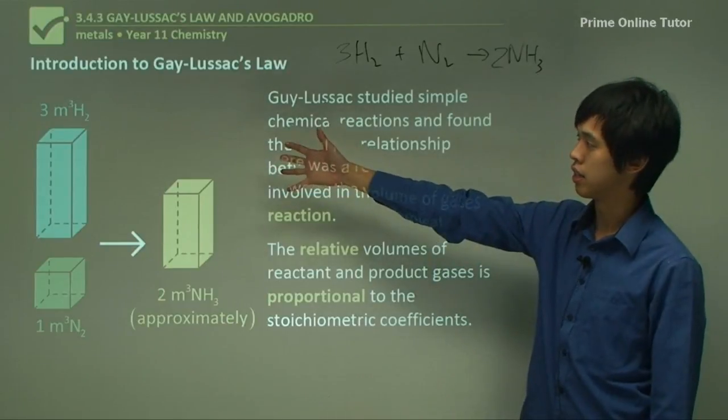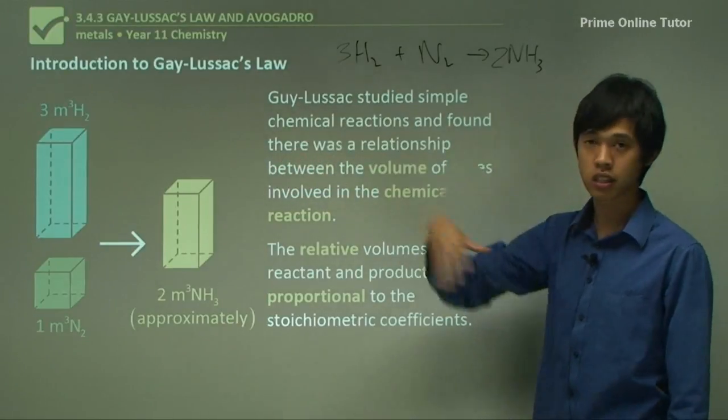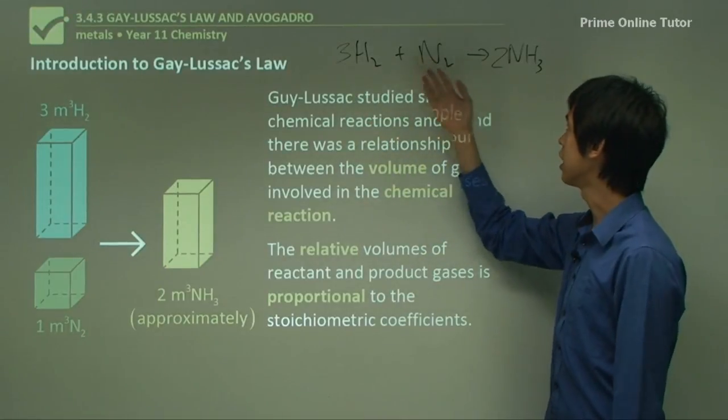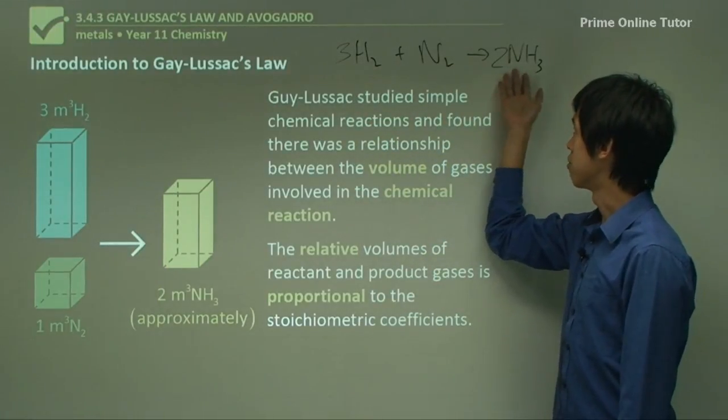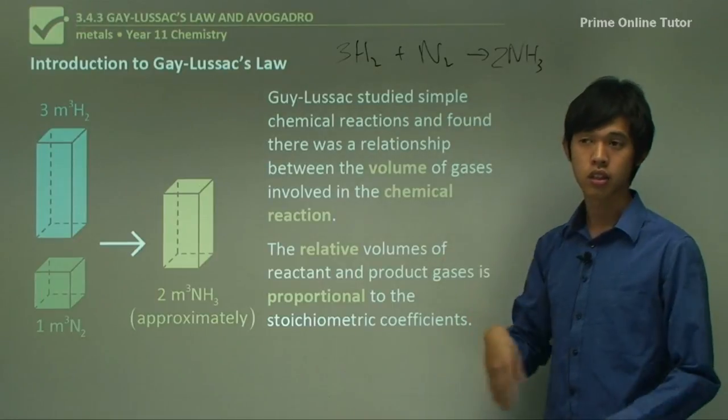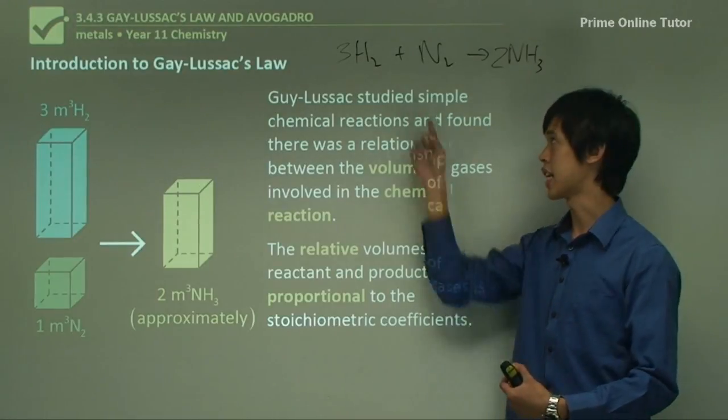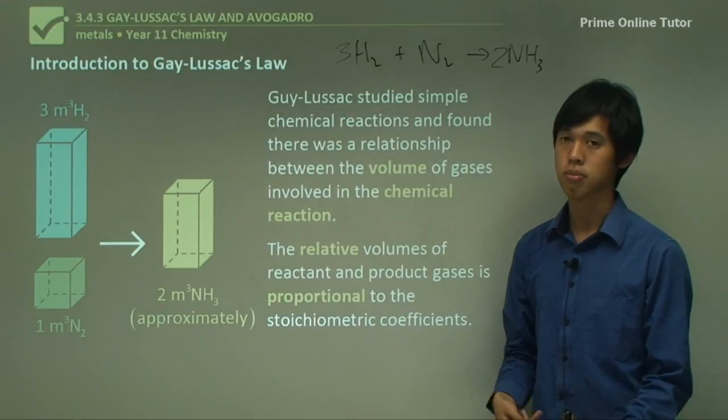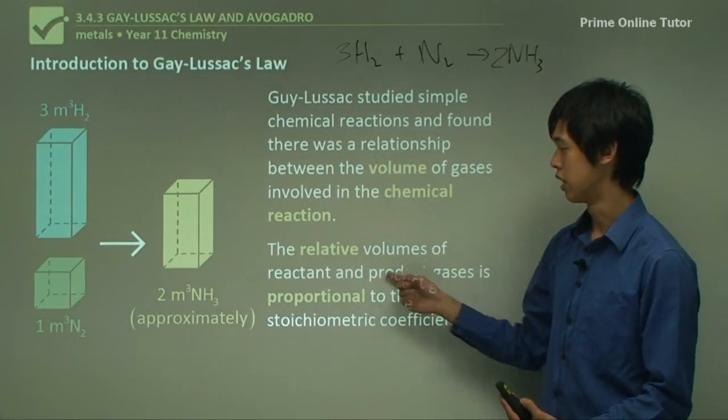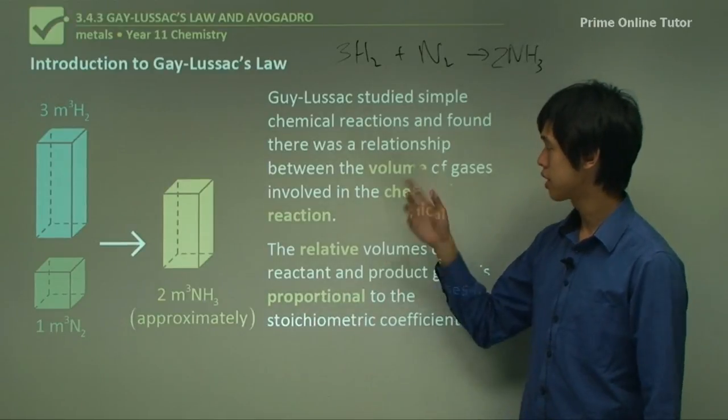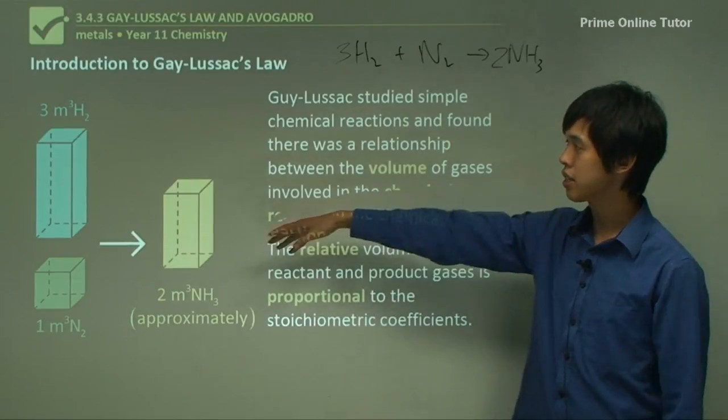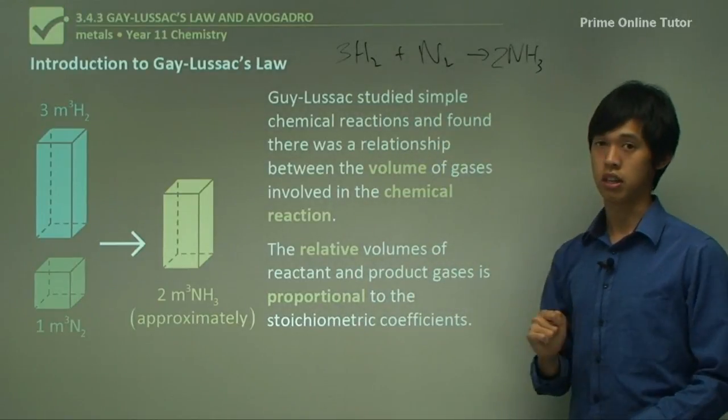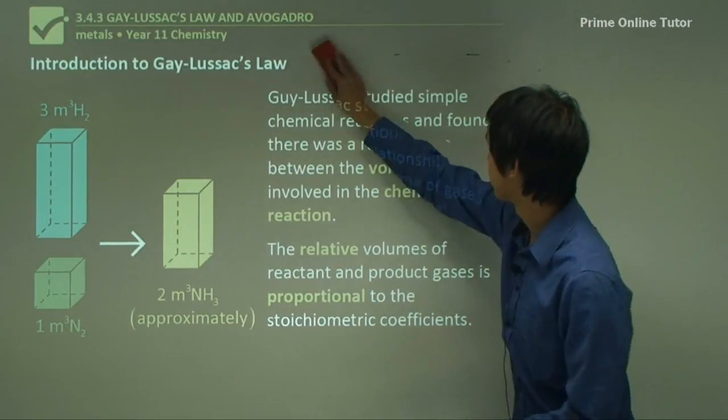you would get 2 liters exactly of this ammonia. And by relative volume, I mean that this amount, it doesn't have to be 3. It could be, say, 9 here, 3 here, and I'll get 6 here. So they don't have to be exactly these numbers, but they just have to be in the right ratio. And that's what it means to be proportional, just to be in the right ratio. So that's what he found. That the amount of volume that you need is directly related to these numbers at the front. And that's what Gay-Lussac discovered.